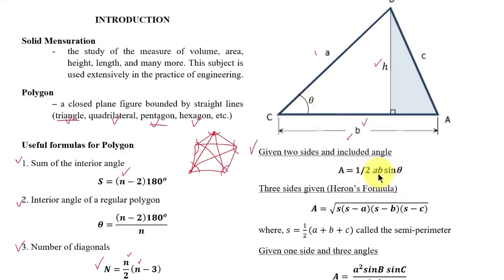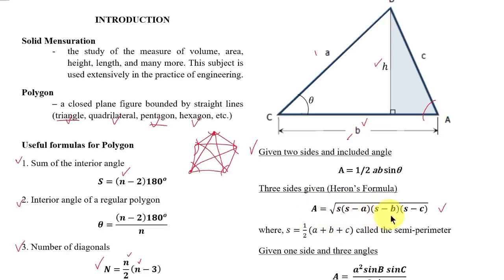Next formula: Heron's formula — used when the given information is all three sides a, b, and c. The formula is: Area = √[s(s − a)(s − b)(s − c)], where a, b, and c are the sides of the triangle, and s is the semi-perimeter solved using s = ½(a + b + c).